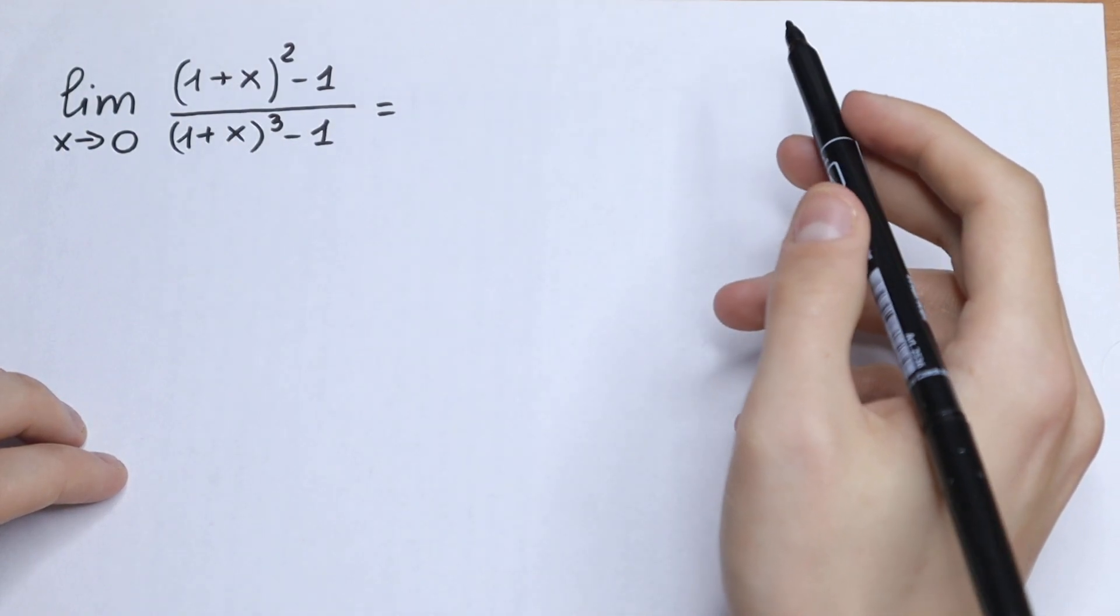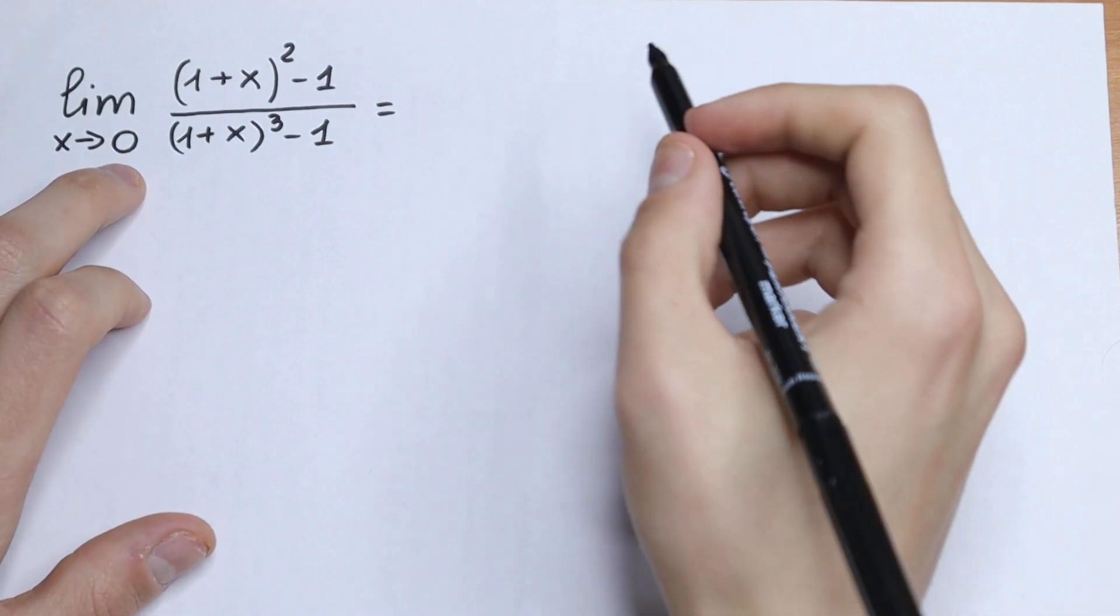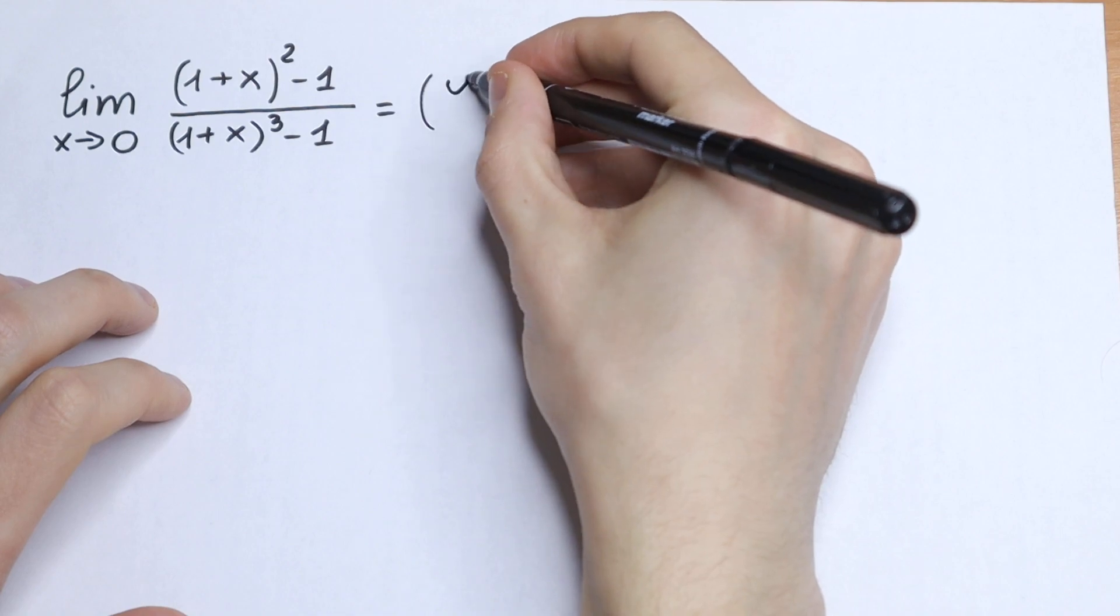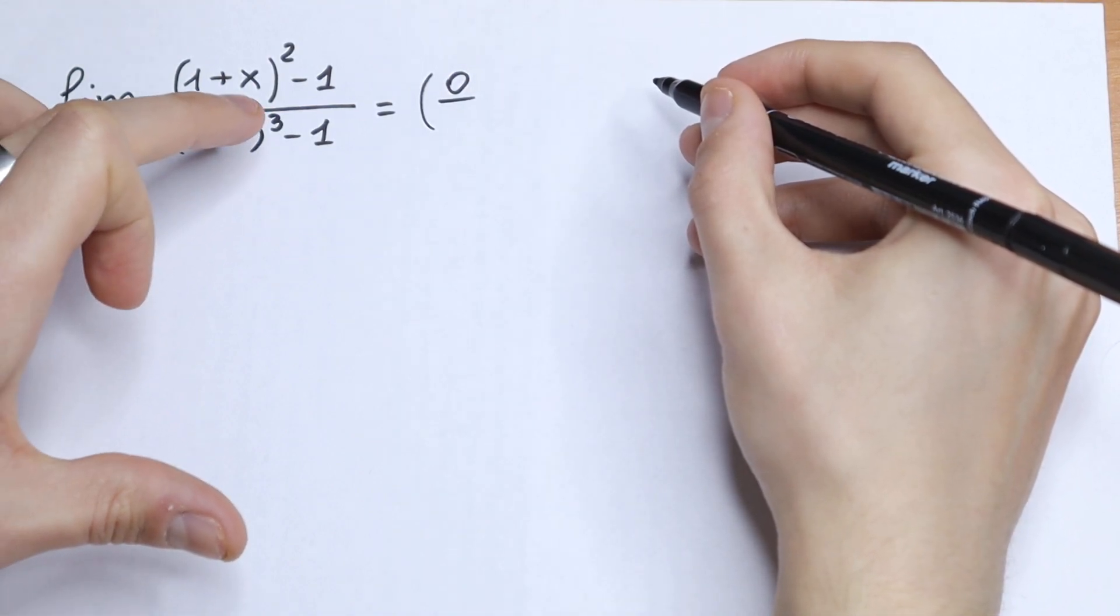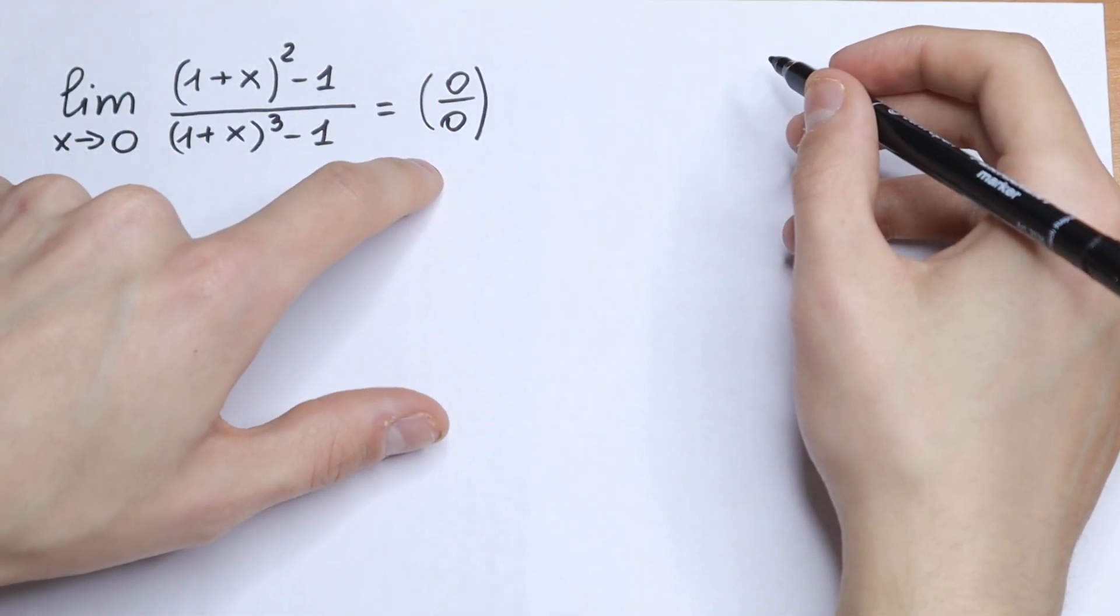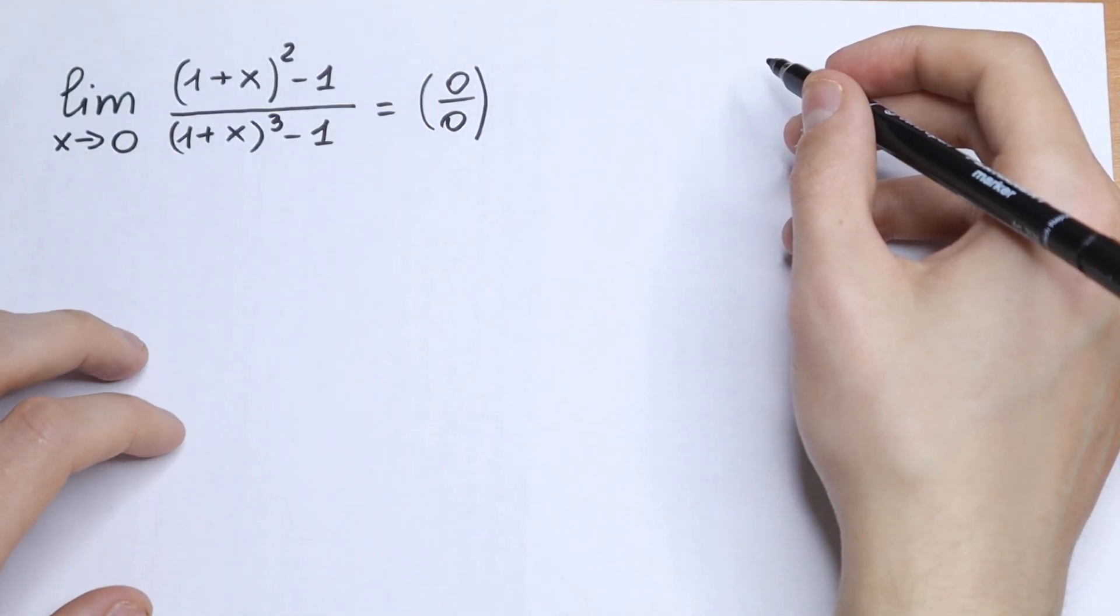So what we recommend is to plug in 0 at first. What will we have? 1 squared minus 1 will be 0, and in our denominator we will have 1 cubed minus 1, which will be 0 as well. So we have 0 over 0, which is undefined, so we don't know what the value represents.